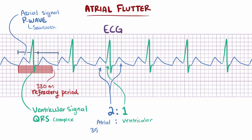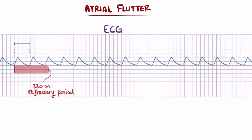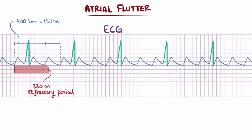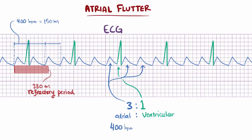So in this example there were 350 atrial beats per minute, but only 175 ventricular beats per minute. Now let's say the atria were going at 400 beats per minute. The first one conducts, then it's 150 milliseconds to the next one. The next atrial beat after that would land at 300 milliseconds, and the AV node still wouldn't be ready, meaning the ventricles wouldn't contract until the third atrial beat comes in at 450 milliseconds. In this case, it's a 3 to 1 atrial to ventricular rate: 400 atrial beats per minute to 133 ventricular beats per minute.